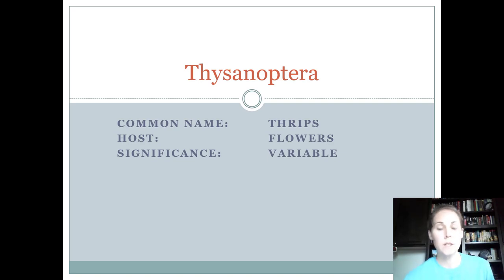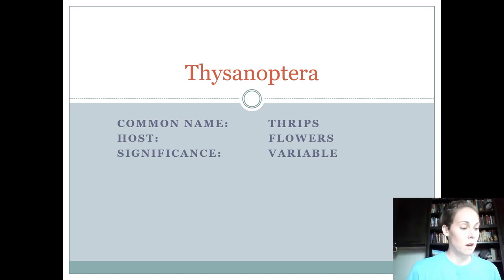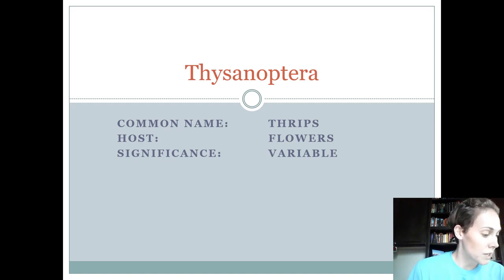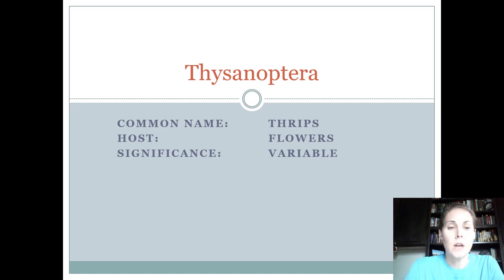Welcome back 4-H'ers. We're going to cover a couple orders during this presentation. We're going to cover Thysanoptera, which is an intermediate order, and then we're going to cover all of Neuroptera, which includes two for juniors, one for intermediates, and four for seniors. Thrips is intermediate and senior only — junior insect members don't necessarily need to know these for the contest.